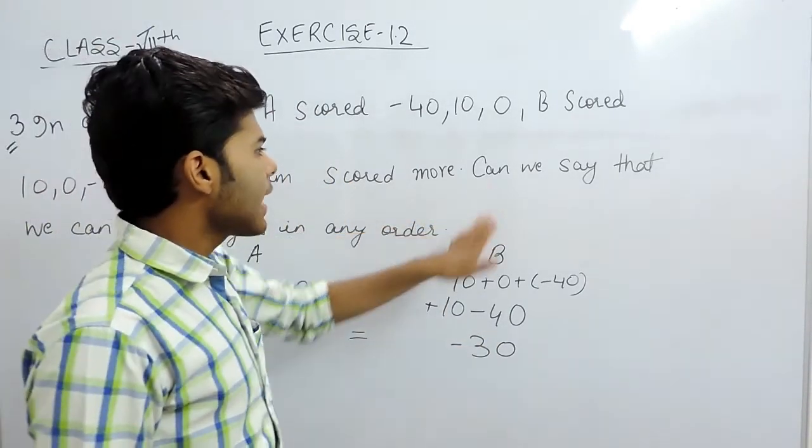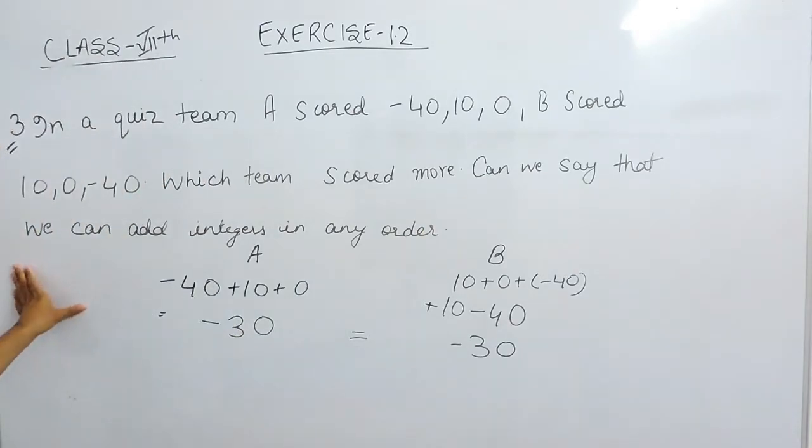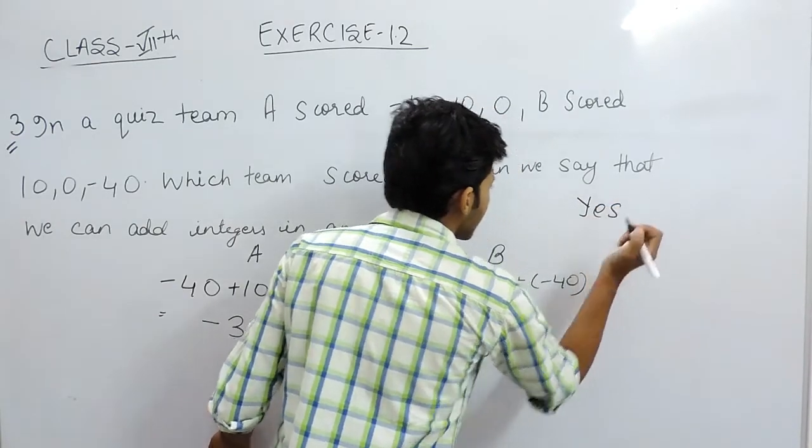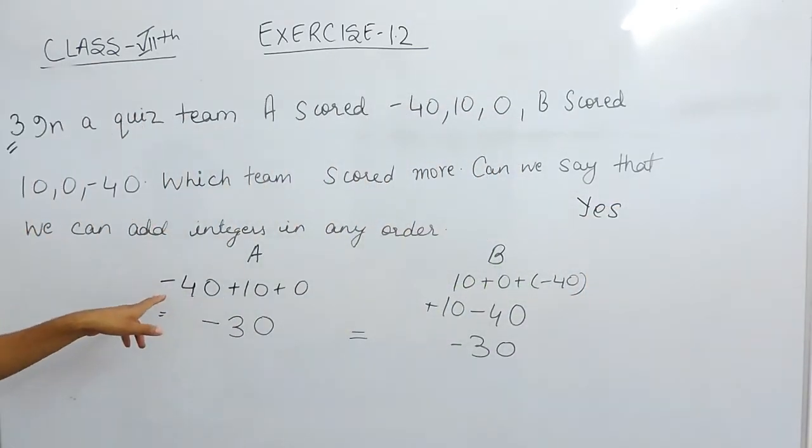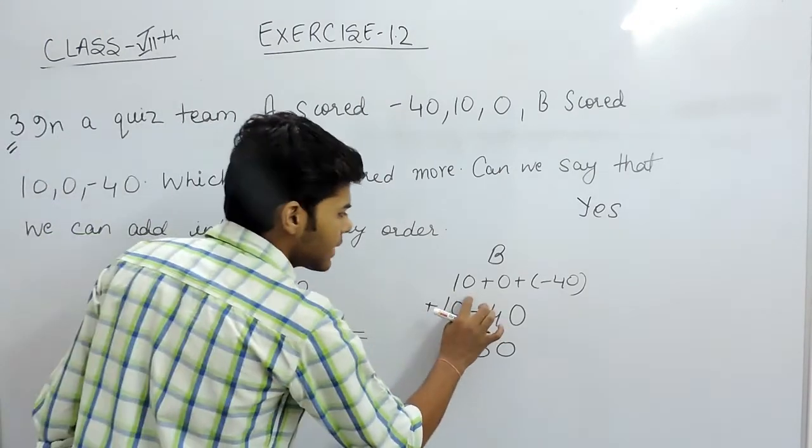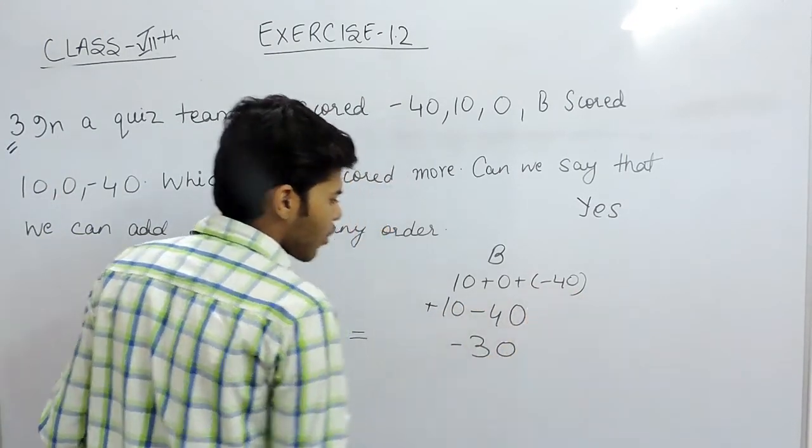Now second part says, can we say that we can add integers in any order? Yes, we can say this because in this question it was minus 40 plus 10 plus 0, but in this question it is 10 plus 0 plus minus 40.